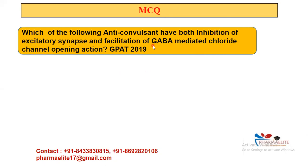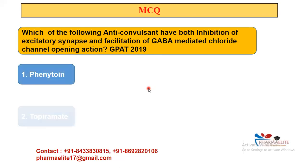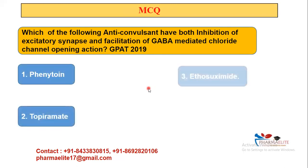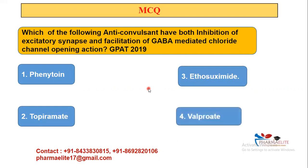We know valproate's mechanisms: sodium channel block, T-type calcium channel block, increase GABA synthesis, stop GABA metabolism, decrease glutamate release. Options are phenytoin, topiramate, ethosuximide, and valproate. The answer is valproate. Phenytoin only prolongs the inactivated state of sodium channels — not GABA. Topiramate acts on sodium channels and decreases glutamate activity. Ethosuximide only inhibits T-type calcium channels. Valproate uniquely covers both GABA facilitation and glutamate inhibition.